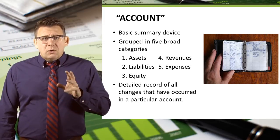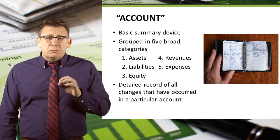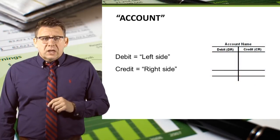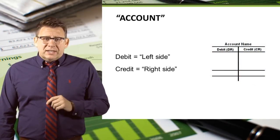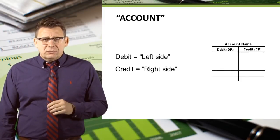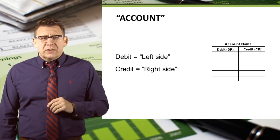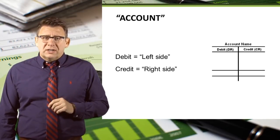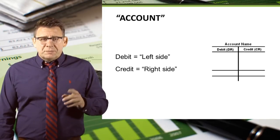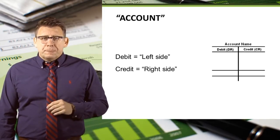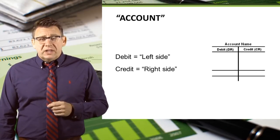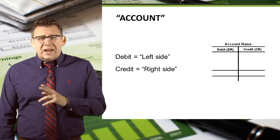We will now learn how financial data moves from the journal into the accounts. In an academic setting, the account is often expressed as a T-account. Two additional terms that are very important are debit and credit. Debit, which is sometimes abbreviated DR, means left side. Credit, sometimes abbreviated CR, means right side.